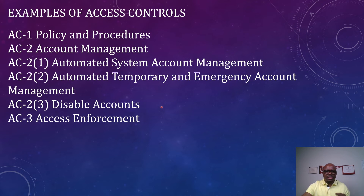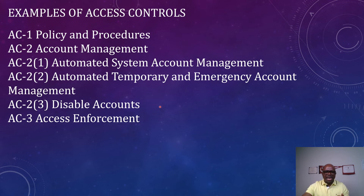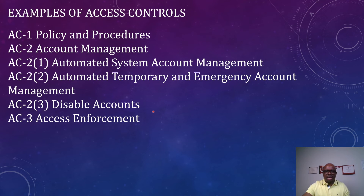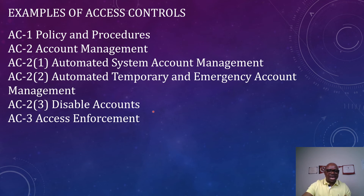Another example of access control is AC-2 Enhancement 3 — Disable Accounts. This control means that accounts that have been inactive for more than a specified period of time must be disabled. Organizations should not just leave accounts unused. For example, if an employee is going on maternity or paternity leave for three months, that account should be disabled, because someone else could take advantage of it and log in on behalf of that user. To safeguard the system and reduce the attack surface, those accounts should be disabled after 30 days without being used.